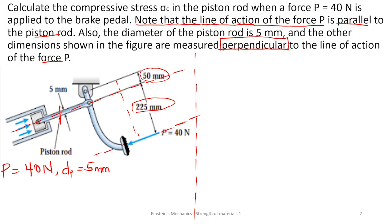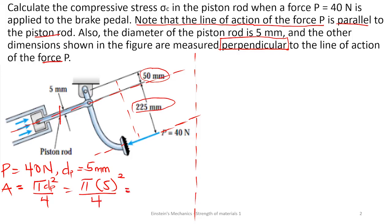Now that we have the diameter of the piston, we can find the area. Area equals pi d squared over 4. Putting in the values, this is pi times 5 squared over 4, working in millimeters, and this gives us 19.63 millimeters squared.